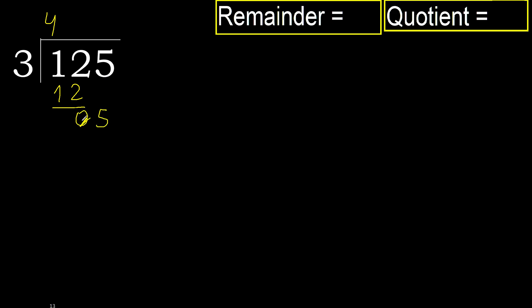Bring down 5. 3 multiplied by 2 is 6, which is greater. 3 multiplied by 1 is 3, which is not greater.